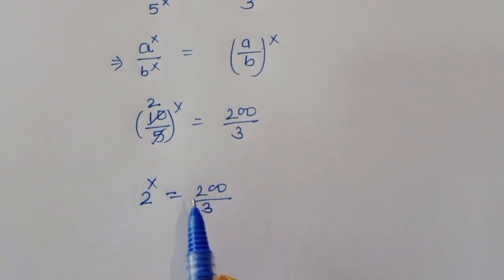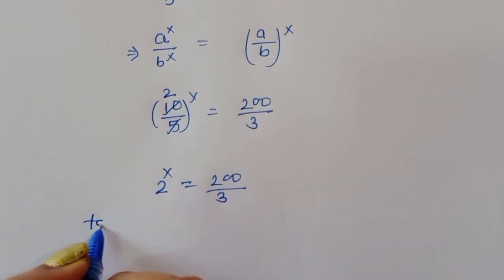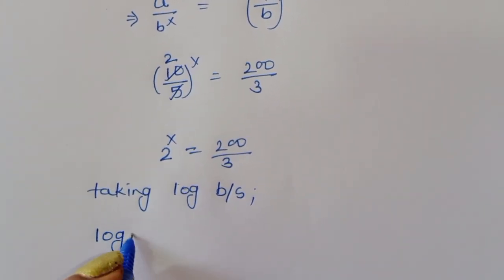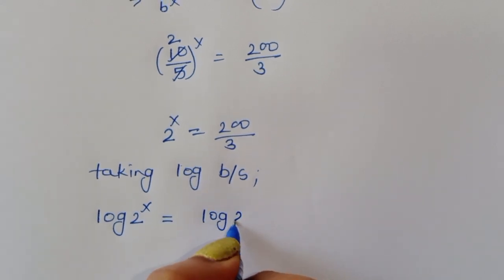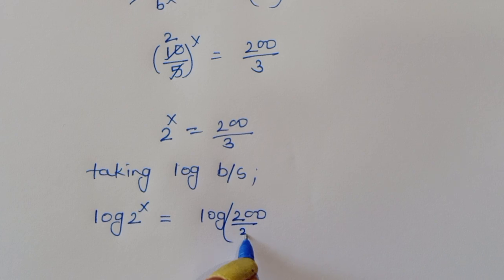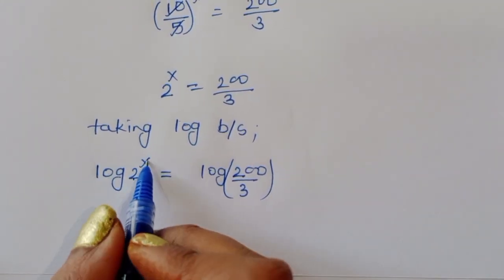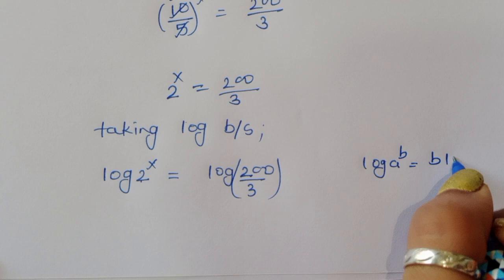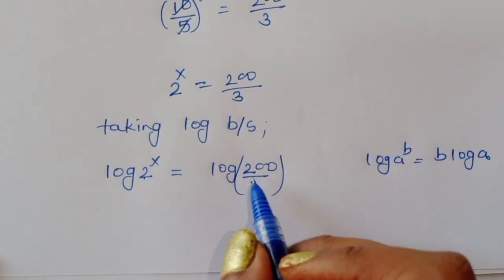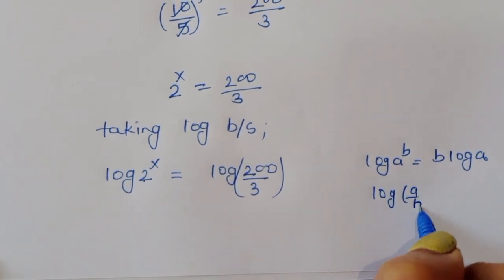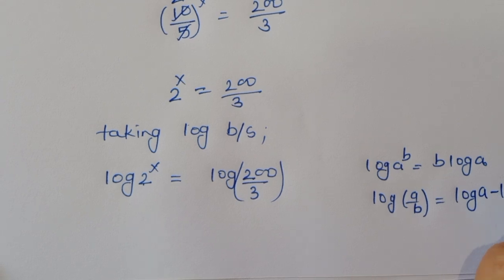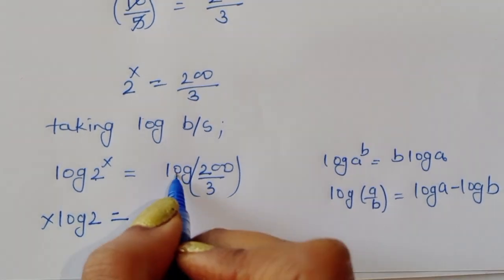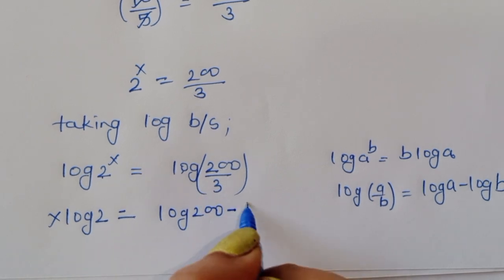Now we have to find the value of x, so we take log of both sides. Taking log of both sides gives us log of 2^x equals log of 200 divided by 3. Using the formula log(a^b) = b·log(a), and log(a/b) = log(a) minus log(b), we get x·log(2) equals log(200) minus log(3).